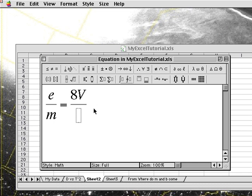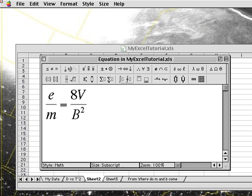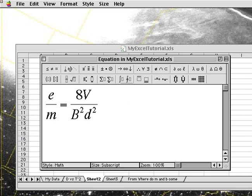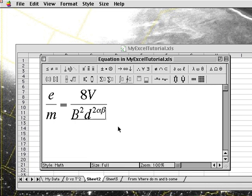And then hit tab. And on the bottom I'm going to do B squared. Hit the right arrow. And I'm going to do a D squared. And I can insert alphas and betas. Hit the right arrow.